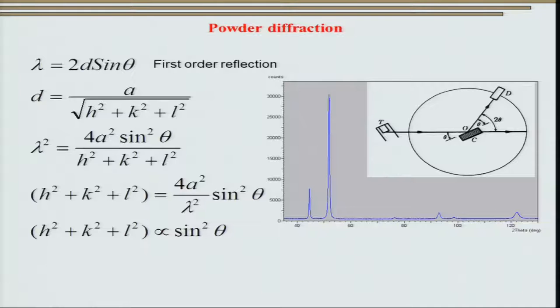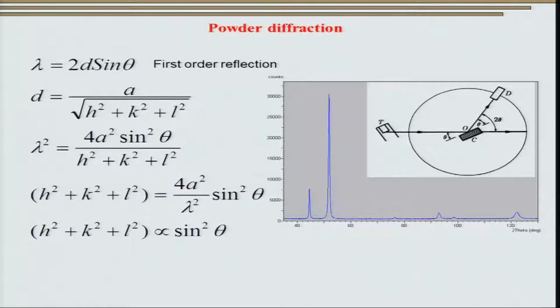To understand which peaks are present in the diffractogram, we can do simple calculations. Going back to Bragg's law for first-order reflection, λ = 2d sinθ. Substituting d for cubic crystals as a divided by √(h²+k²+l²), and rearranging, we get h²+k²+l² proportional to sin²θ. So once you obtain a diffractogram, you calculate θ at peak positions and compute the ratio of sin²θ. However, this is applicable only for single-phase materials; multi-phase materials require software to handle all peaks present.